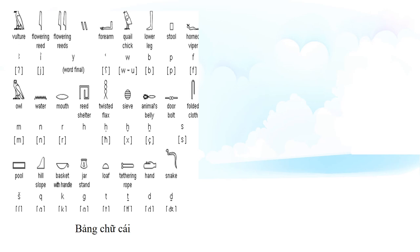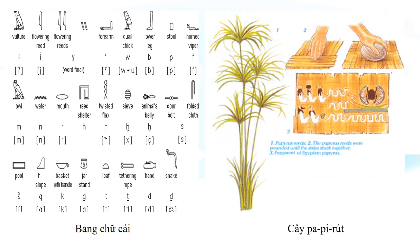Người Ai Cập cổ đại họ sẽ viết chữ trên chất liệu gì? Người Ai Cập cổ đại đã biết cách làm ra giấy và giấy được làm từ loại cây Papyrus. Cây Papyrus có chiều cao khoảng 2-3 mét và được xem là loại thực vật cổ xưa nhất được loài người biết đến. Ai Cập cổ đại được coi là nơi xuất xứ của loài cây này.